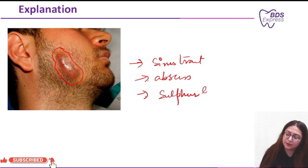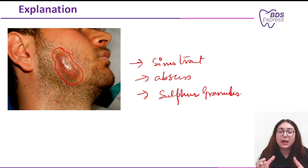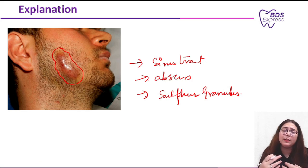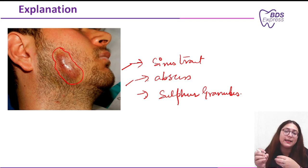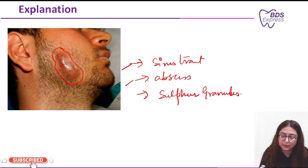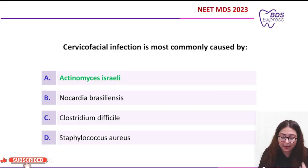Actinomyces israelii are the normal commensals of the oral cavity, but when the mucosal lining gets ruptured, it causes infection leading to sinus tract formation, abscess, and sulfur granules — which are characteristic of cervicofacial actinomycosis.